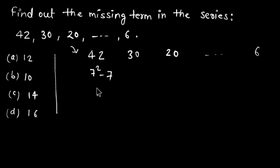49 minus 7, I get 42. And it is like 7 minus 1, decrease the number by 1. So it is like 6 squared minus 6, 36 minus 6 is 30. And it is like 5 squared minus 5.